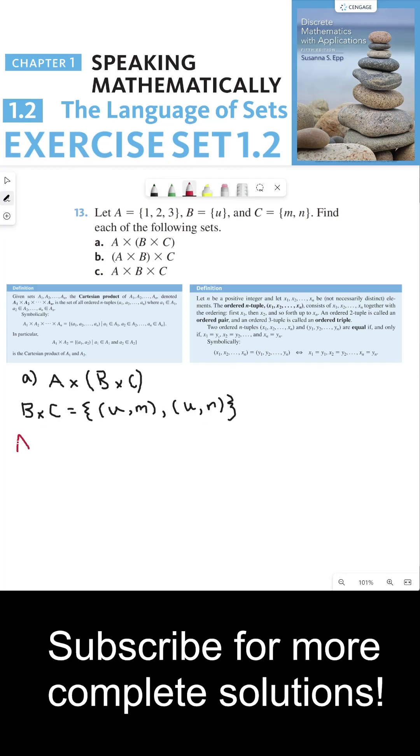So to do A cross B cross C, this is going to be the set of all ordered pairs where the first element is an element of set A, for example, like one. And the second element from B cross C, which there are two elements here. Both elements are ordered pairs. We could choose, for example, the ordered pair U, M, and that could be a second element in this ordered pair.